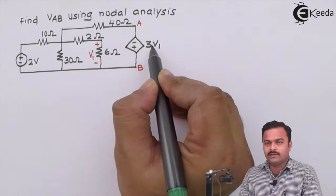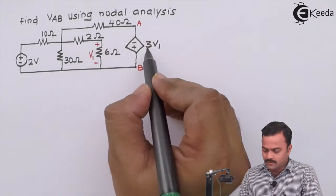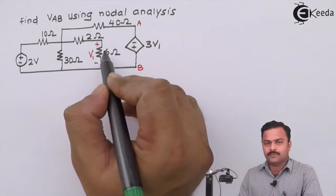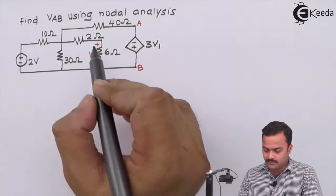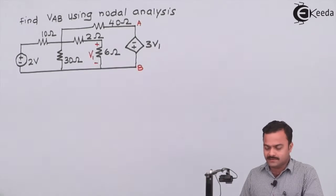Which is 3V1, where the voltage is dependent upon the voltage across this 6 ohm. So basically, the voltage of this voltage source is dependent upon the voltage of 6 ohm. Let's solve it by nodal analysis.